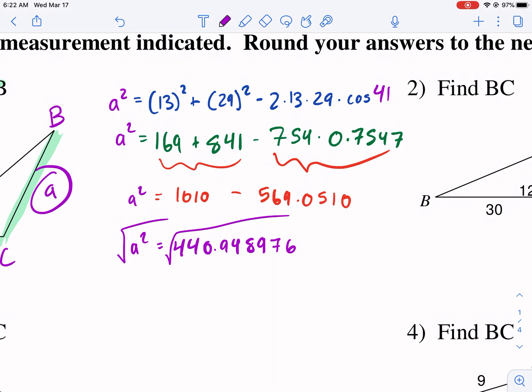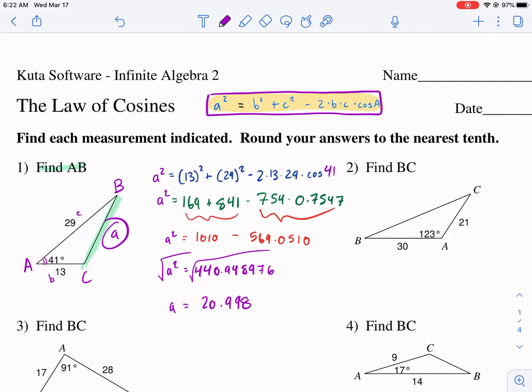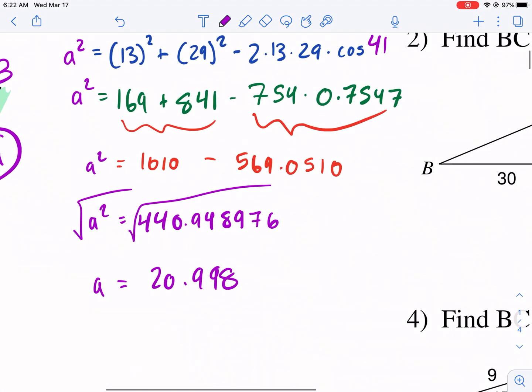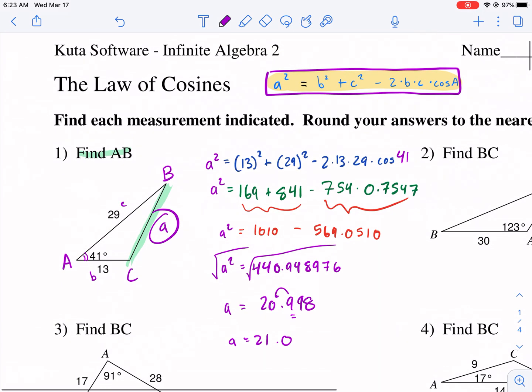I'm just writing the decimals a little bit rounded for this. I just leave it as is in my calculator, so I take the square root, and I get 20.998. Round your answer to the nearest tenth. Well, if I round this to the nearest tenth, it's going to round this up to 21. So, A equals 21.0. So now I found A, and it's 21. There's my answer.